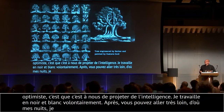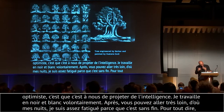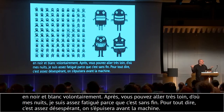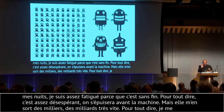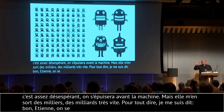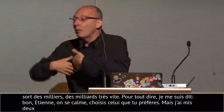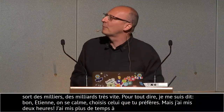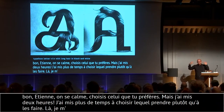C'est à nous de projeter de l'intelligence. Je travaille en noir et blanc volontairement parce que quand on travaille par la couleur, ça part dans tous les sens. Là je lui ai dit : « Imagine-moi des arbres faits par Escher et peints par Gustave Doré ». Après, vous pouvez aller très loin — d'où mes nuits. C'est sans fin — et c'est assez désespérant parce que vous avez une machine qui se fatiguera avant vous. Là je lui ai dit : « Fais-moi des petits monstres rigolos mais un peu méchants » — elle m'en sort des milliers très vite.